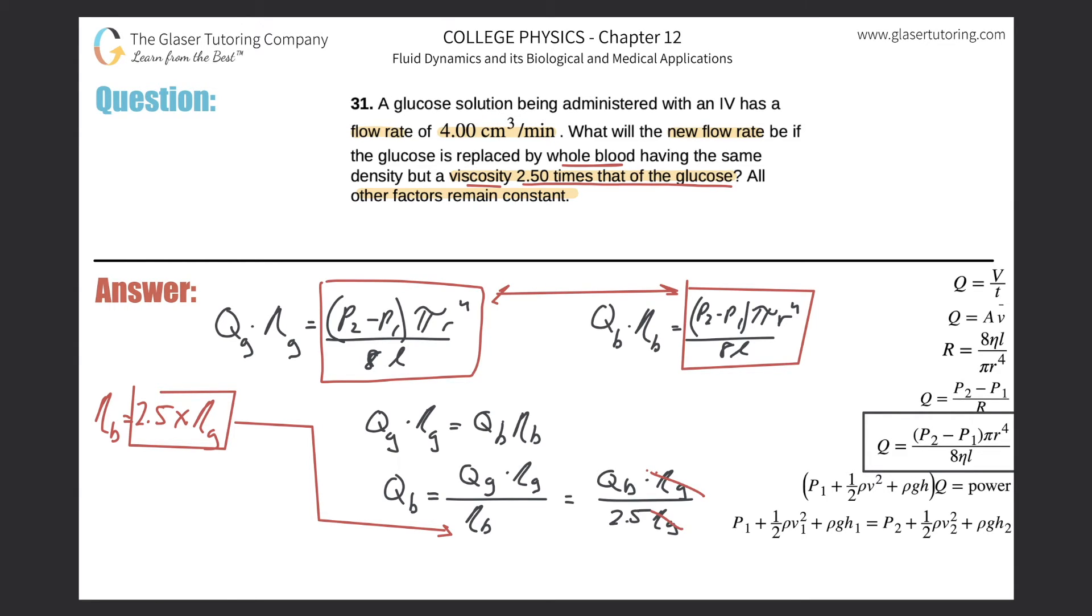Now look what we have. We have a nice simple relationship where it says just take the flow rate of the blood and divide it by 2.5. So we can simply now plug that all in.